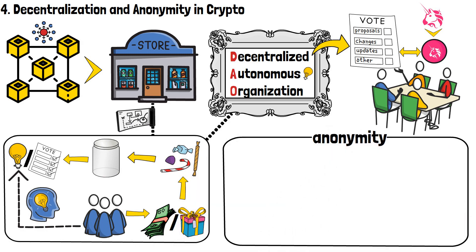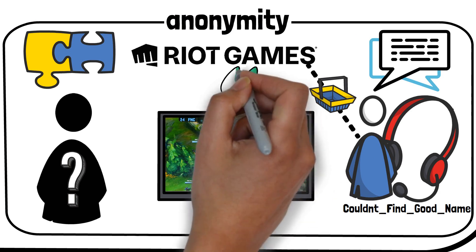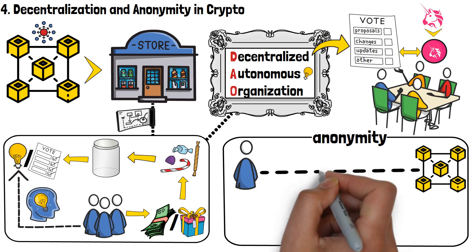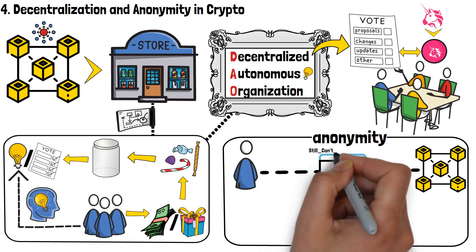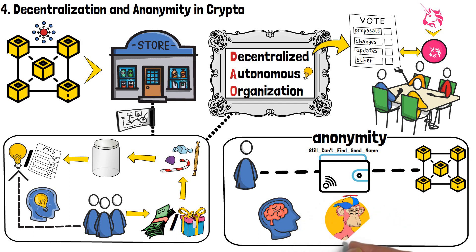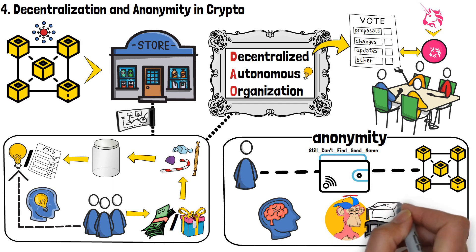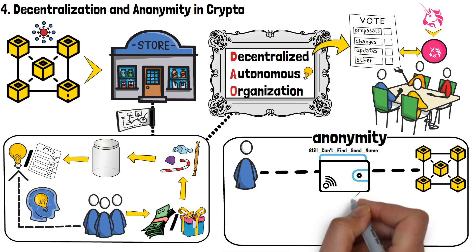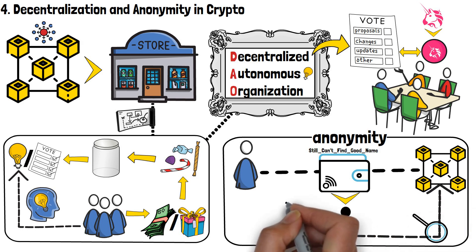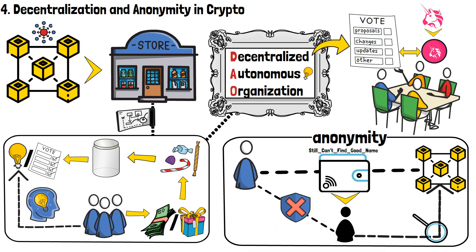Now, when it comes to anonymity, it gets even more interesting. When interacting with various decentralized, blockchain-powered projects, you would use your cryptocurrency wallet. Your public wallet address would act as your alias on the blockchain. In short, with the help of your cryptocurrency wallet, you're able to remain anonymous on the blockchain. All of the transactions that you perform will be public for everyone to see, but no one will know that it's you who's performing those transactions — well, unless you tell them.